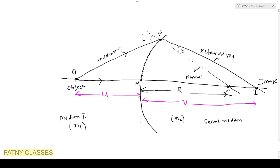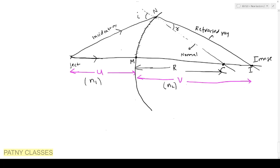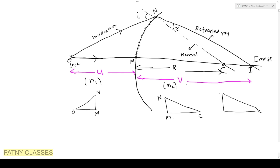We consider the point M here, which is essentially the pole of the surface. For our calculations we consider small aperture — that is, N is as small as possible. With a small aperture we can identify three triangles: the first triangle is NOM, the second triangle is NCM, and the third triangle is NIM.